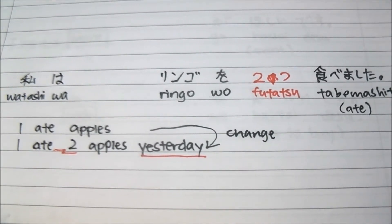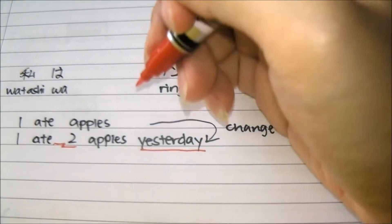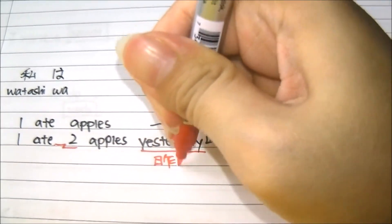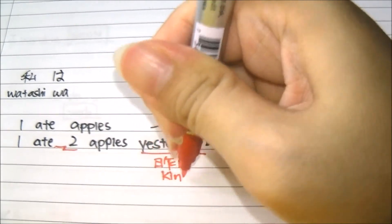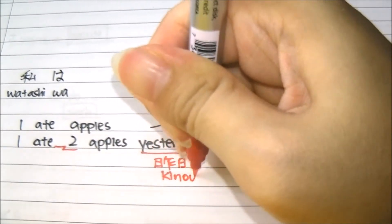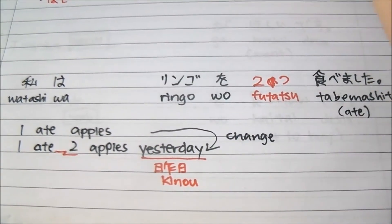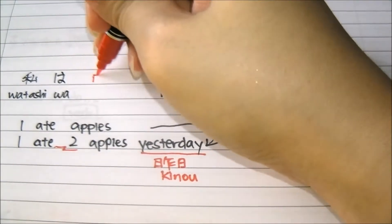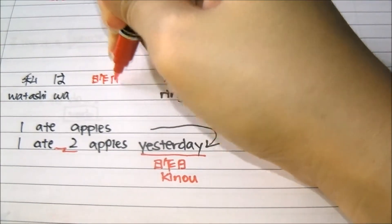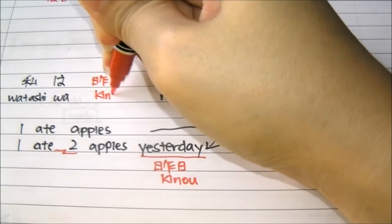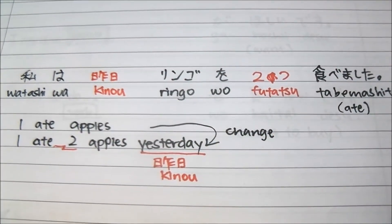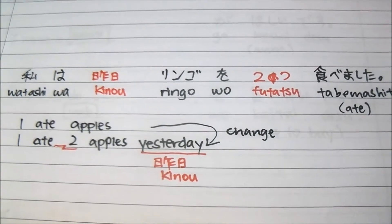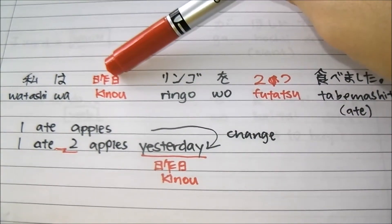Yesterday is 'kino'. We will add 'kino' after 'watashi wa'. So you learn something new today: for things like time and date, you put it in front — after the subject.